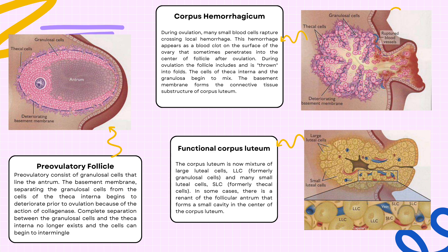The left photo on the right screen is the preovulatory follicle that consists of granulosa cells that line the antrum, and the basement membrane separating the granulosa cells from the cells of the theca interna. The right photo on the screen is the corpus hemorrhagicum. In this period, many small blood vessels rupture causing local hemorrhage. This hemorrhage appears as a blood clot on the surface of the ovary that sometimes penetrates into the center of the follicle after ovulation.